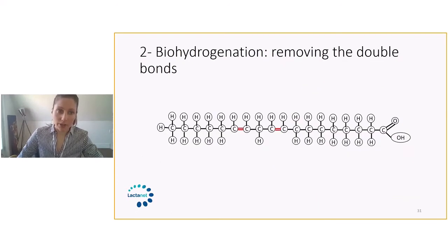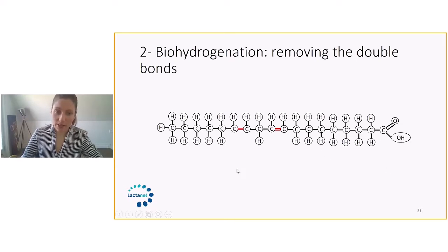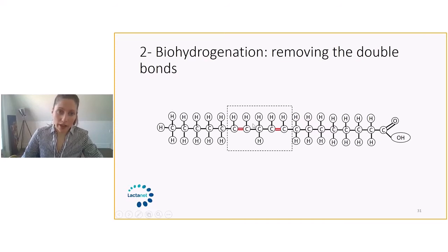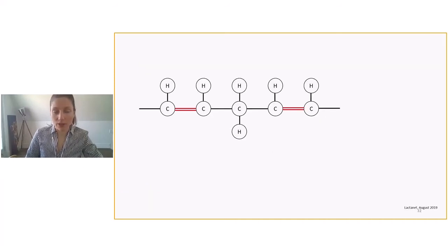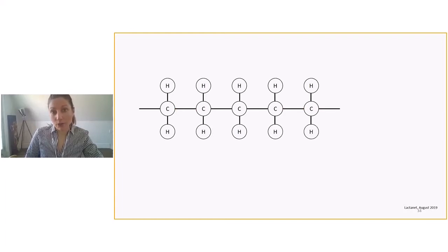Looking into step two, which is the biohydrogenation. If we look at this molecule here, this is a polyunsaturated fatty acid. It's a C18-2. So the two is for the two double bonds. Biohydrogenation means that the double bond would be undone, removed from the fatty acid. In the rumen, the bugs will attach hydrogen to the carbon molecule and they will undo the double bond like this.